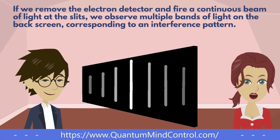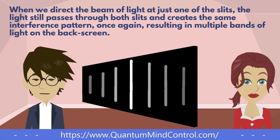If we remove the electron detector and fire a continuous beam of light at the slits, we observe multiple bands of light on the back screen corresponding to an interference pattern. When we direct the beam of light at just one of the slits, the light still passes through both slits and creates the same interference pattern, once again resulting in multiple bands of light on the back screen.